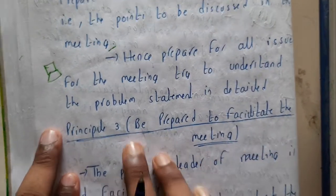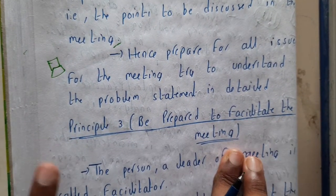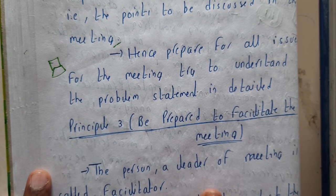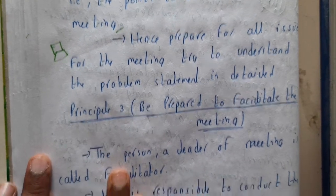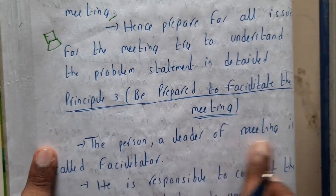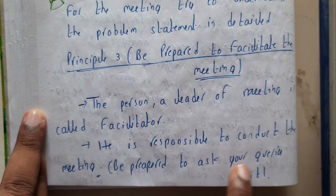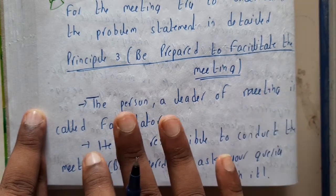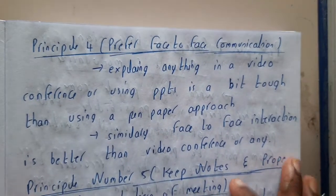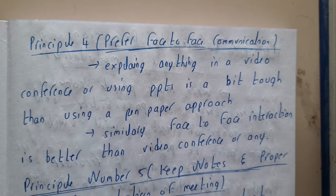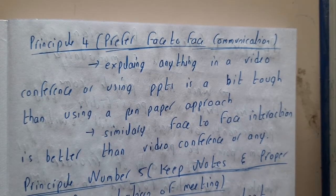Principle three is to be prepared to facilitate meetings. Whenever there is a meeting, make sure you are present — or at least the team leader should attend. The leader of the meeting is called the facilitator, and they are responsible for conducting the meeting. Be ready with your questionnaire and ask your queries when given a chance. Getting clarity is essential, because without it the end product will not meet customer requirements.